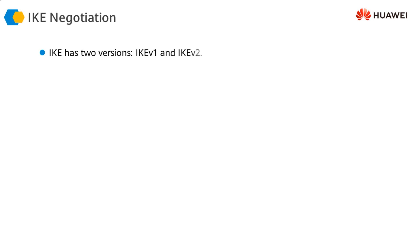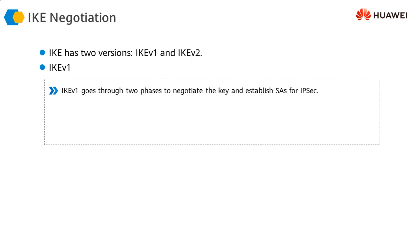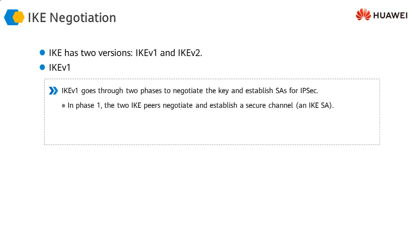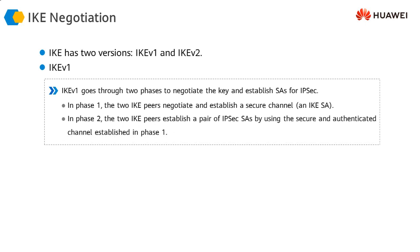In this video we are going to look at the two versions of IKE: IKEv1 and IKEv2. In the case of IKEv1, there are two phases. The key exchange and the establishment of IPsec security associations happens in two phases. In phase one, the two IKE peers negotiate and establish a secure channel, which is an IKE SA. Phase two is responsible for developing an IPsec security association between the two peers.